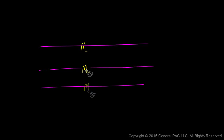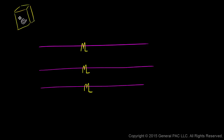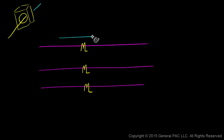Our CTs essentially look like this. Think about these CTs as the window-type CTs we talked about in the last module. The window-type CTs have a window right in the middle, and the conductor essentially flows right through this window. Our primary phase A current flows through like this, primary phase B current flows through like that, and primary phase C current flows like that.